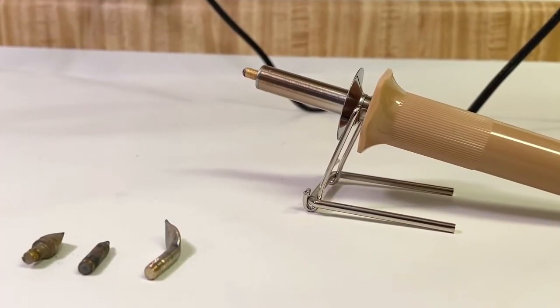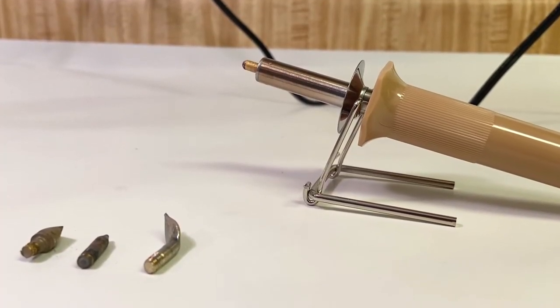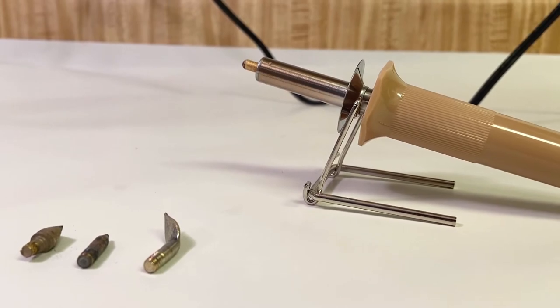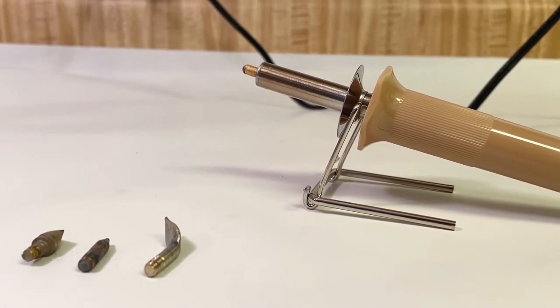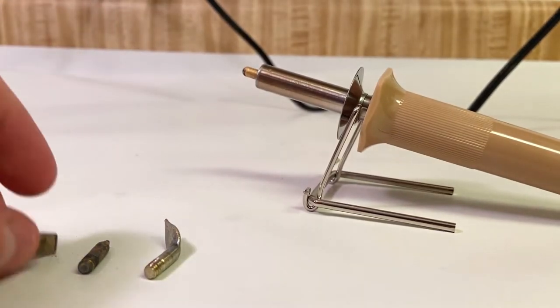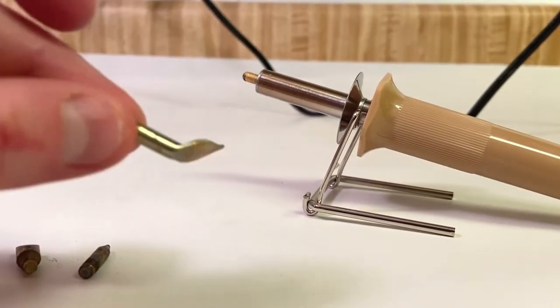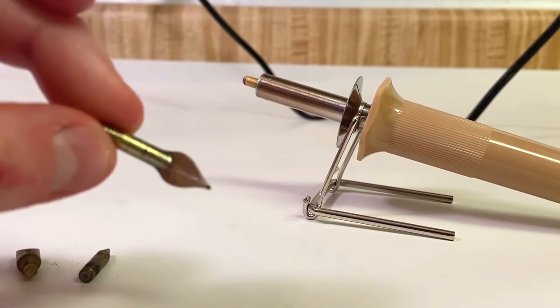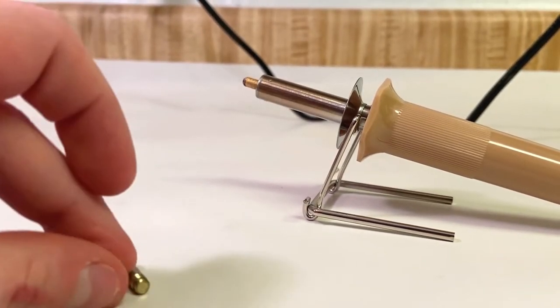My burner is plugged in and warming up right now. The one I have is actually from Hobby Lobby. You can find a similar one at Walmart or Michaels and they usually come with different little tips that you can screw onto the top and they have different effects on the way that you burn. So I'm going to quickly show you what the different tips do.